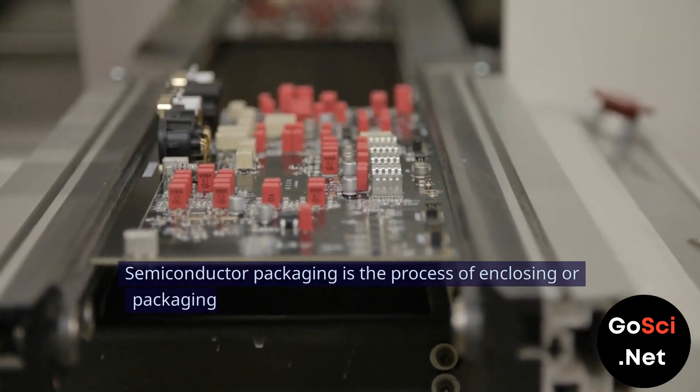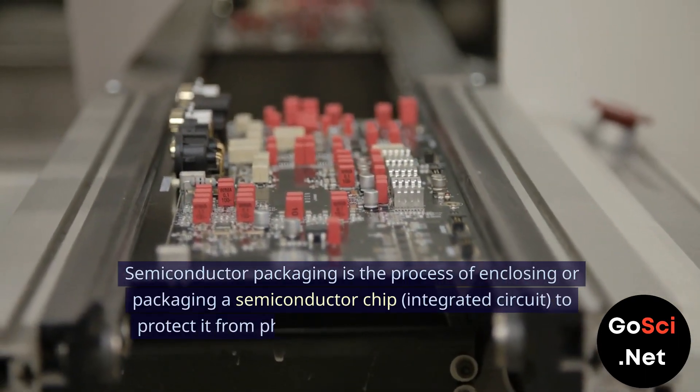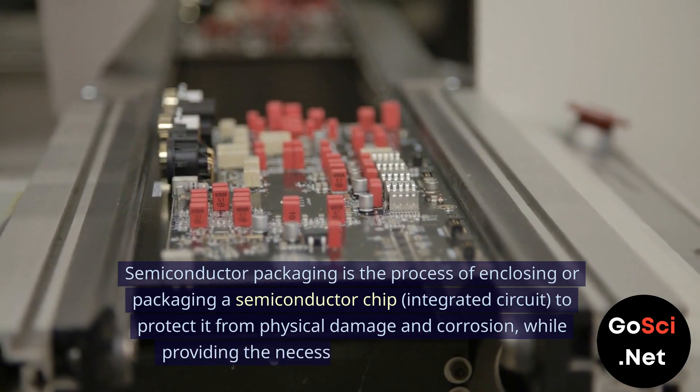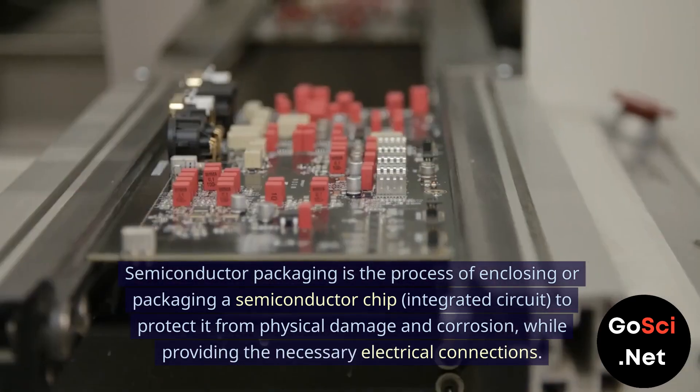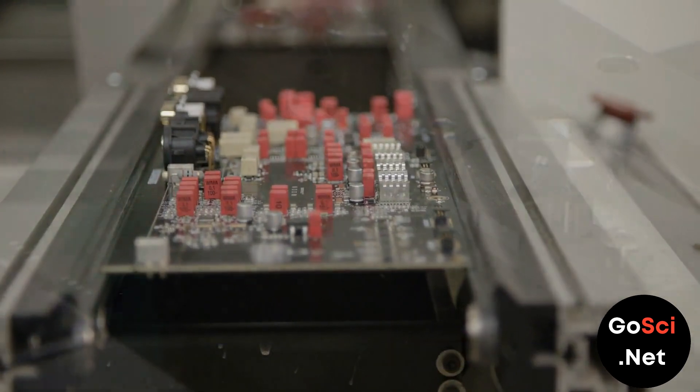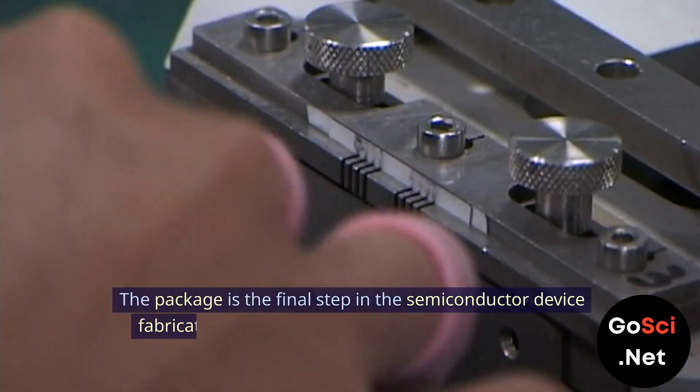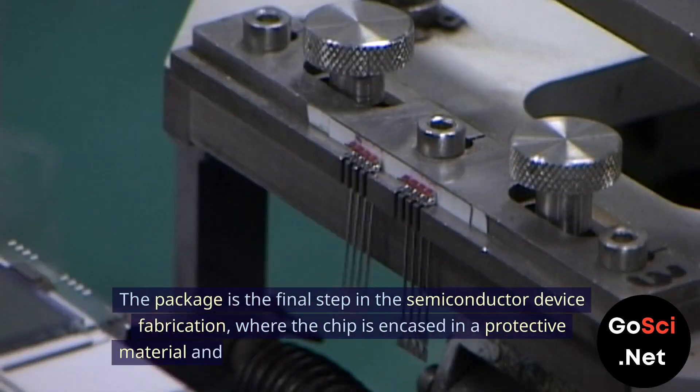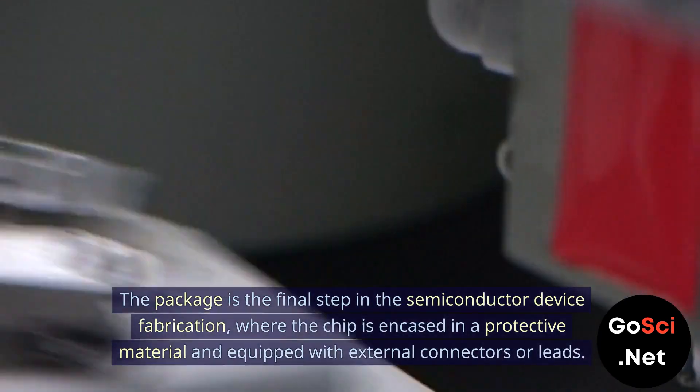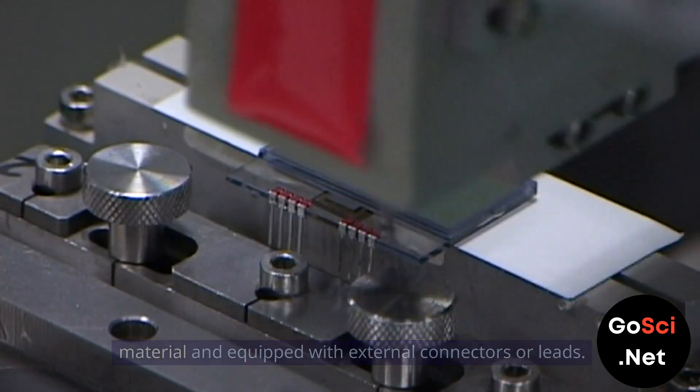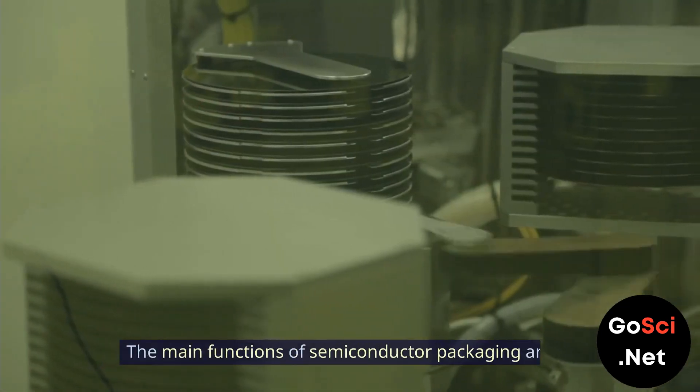Semiconductor packaging is the process of enclosing or packaging a semiconductor chip, or integrated circuit, to protect it from physical damage and corrosion while providing the necessary electrical connections. The package is the final step in the semiconductor device fabrication, where the chip is encased in a protective material and equipped with external connectors or leads. The main functions of semiconductor packaging are to: